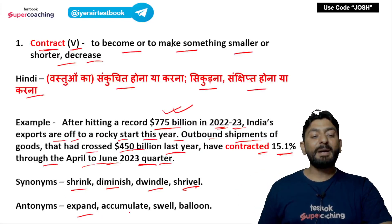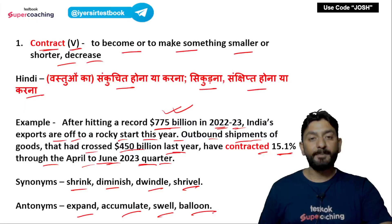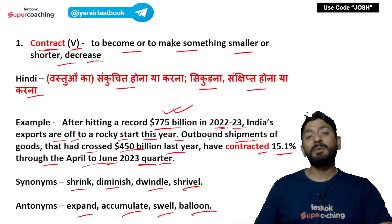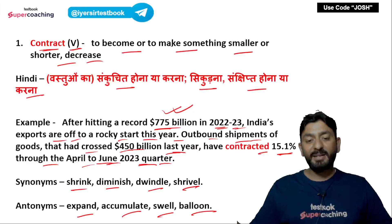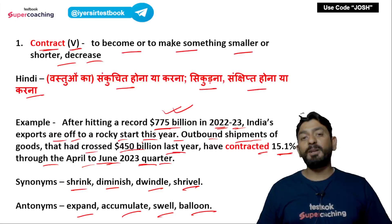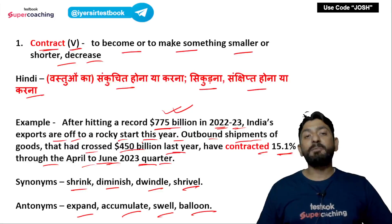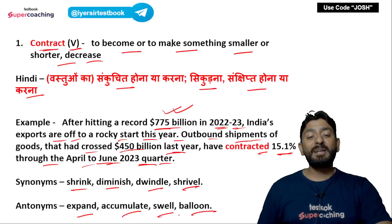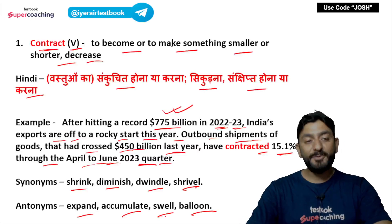Antonyms of 'contract': expand, accumulate, swell, balloon. 'Balloon' can also be used as a verb — जैसे गुबारे में हवा डालने से वो फैलता है, वैसे ही 'he is ballooning as every month passes by' मतलब वो एक गुबारे की तरह फैलता जा रहा है हर एक महीने के साथ. So expand, accumulate, swell, balloon — ये सारे antonyms हैं contract के.